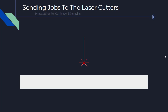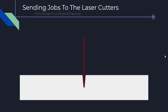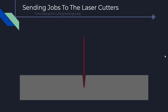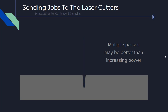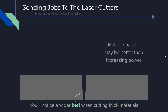Now that we've seen where the laser cutter settings use power and speed, let's briefly discuss how power and speed relate to each other. When laser cutting, power and speed have an inverse relationship — power should be decreased as speed increases, and as power increases, speed should decrease. Note that thicker materials have more to cut, and darker or denser materials absorb more energy. Multiple passes may be better than increasing power on these types of materials. You'll also notice a wider kerf when cutting thicker or denser materials.